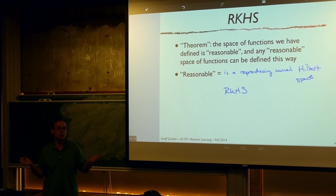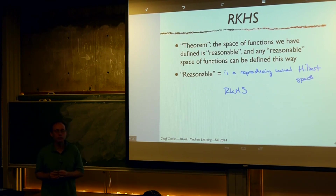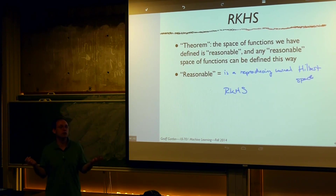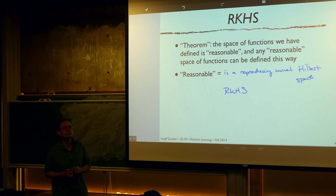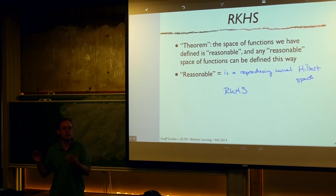You can mix kernels of different widths — we'll talk about kernel combination later. This is a good idea if you're unsure about the spatial scale of your function and want the algorithm to pick it for you. Kernels do not have to be continuous — you can define kernels over discrete spaces. However, continuous kernels give nice additional properties. The two required assumptions are symmetry and positive semidefiniteness.